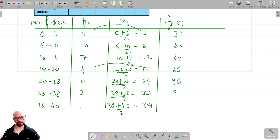So let's find the summation of sigma fi into xi.